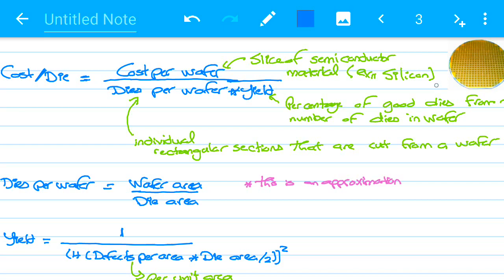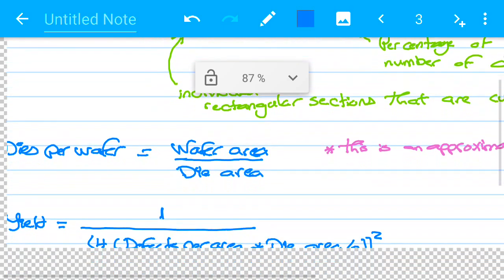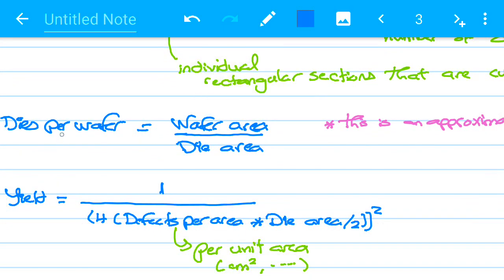So that's not a calculatable thing. The second thing is the dies per wafer. How do I know the dies per wafer? Here appears the dies per wafer equation. It's really the wafer area over die area.